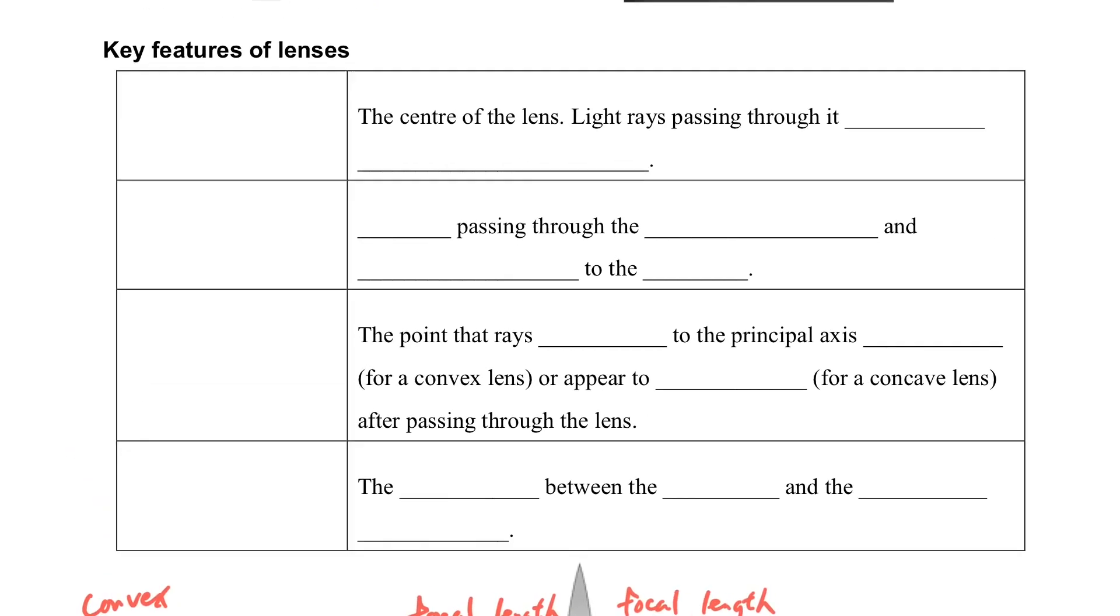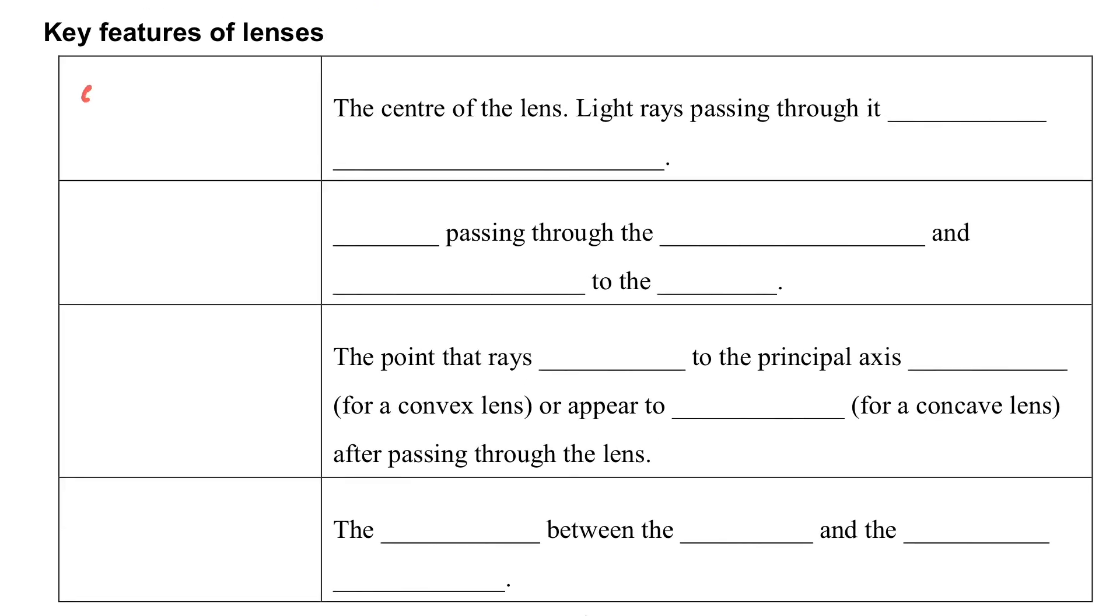Once again, let's go through the names. We have the optical center. By definition, it is the center of the lens. When the light passes through it, it will not change direction.